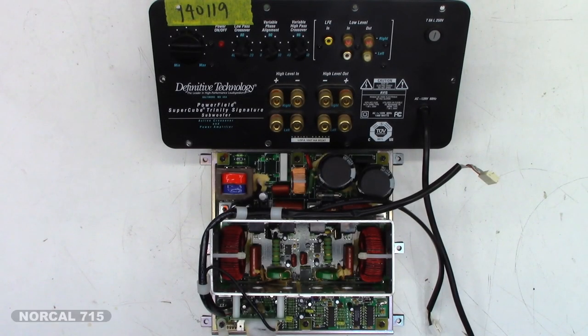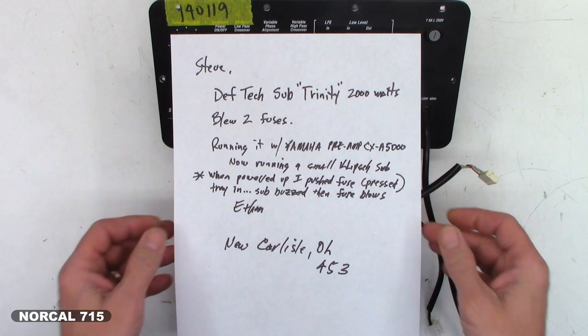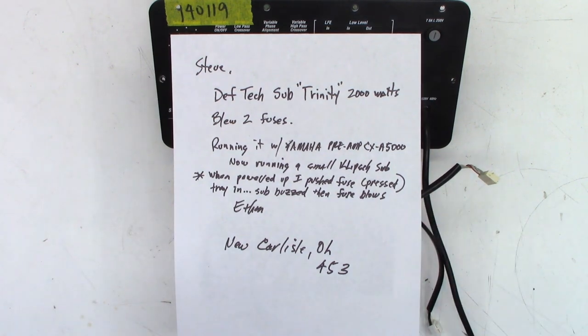This is another Definitive Technology PowerField Supercube subwoofer, the Trinity Signature subwoofer. It was sent in with a note: Deftech Sub Trinity 2000 watts Bluetooth fuses. Running it with Yamaha preamp CXA-5000, now running a small Klipsch sub. When I powered up I pushed the fuse, pressed, try in sub buzz then fuse blows. Ethan from New Carlisle, Ohio.